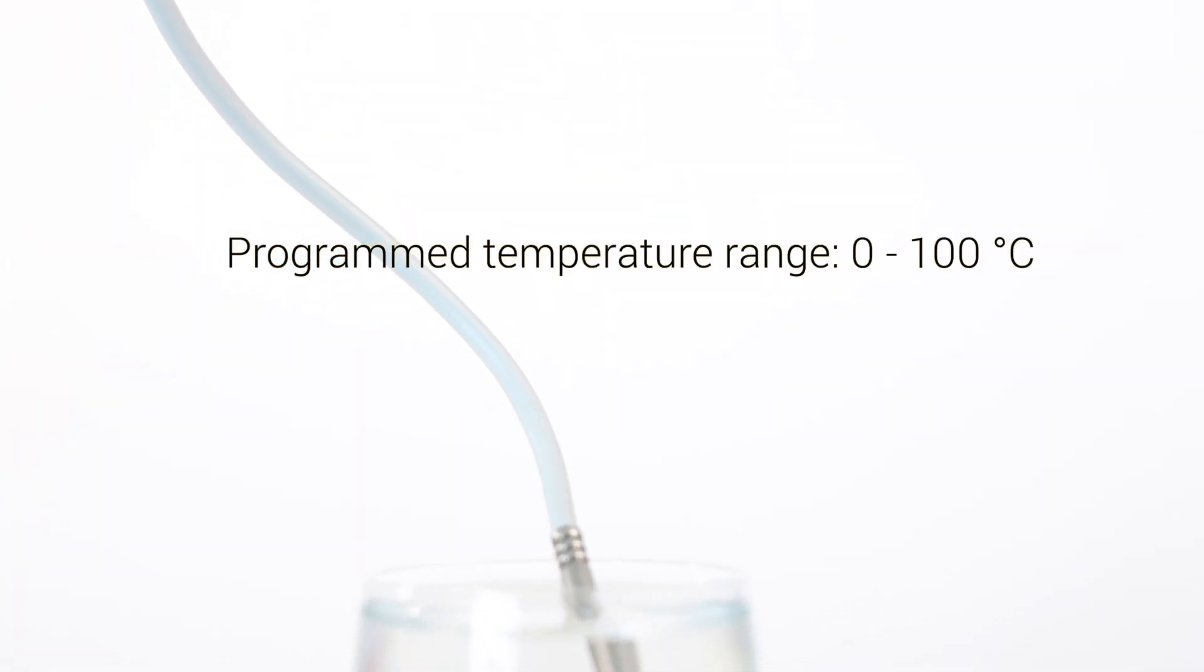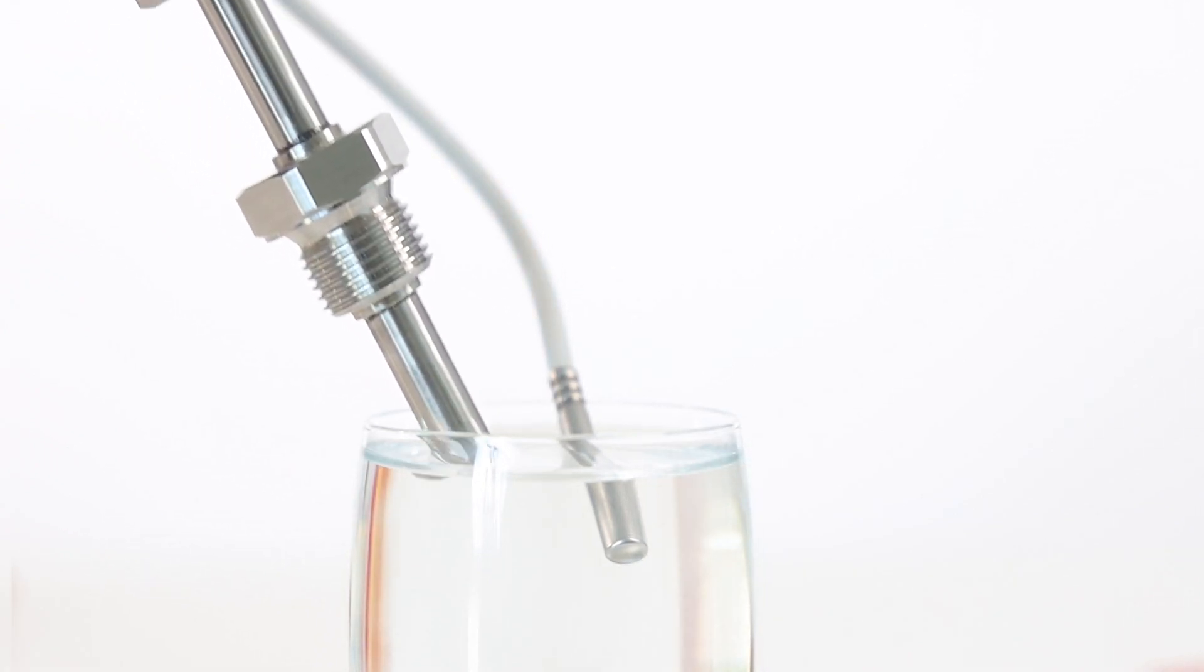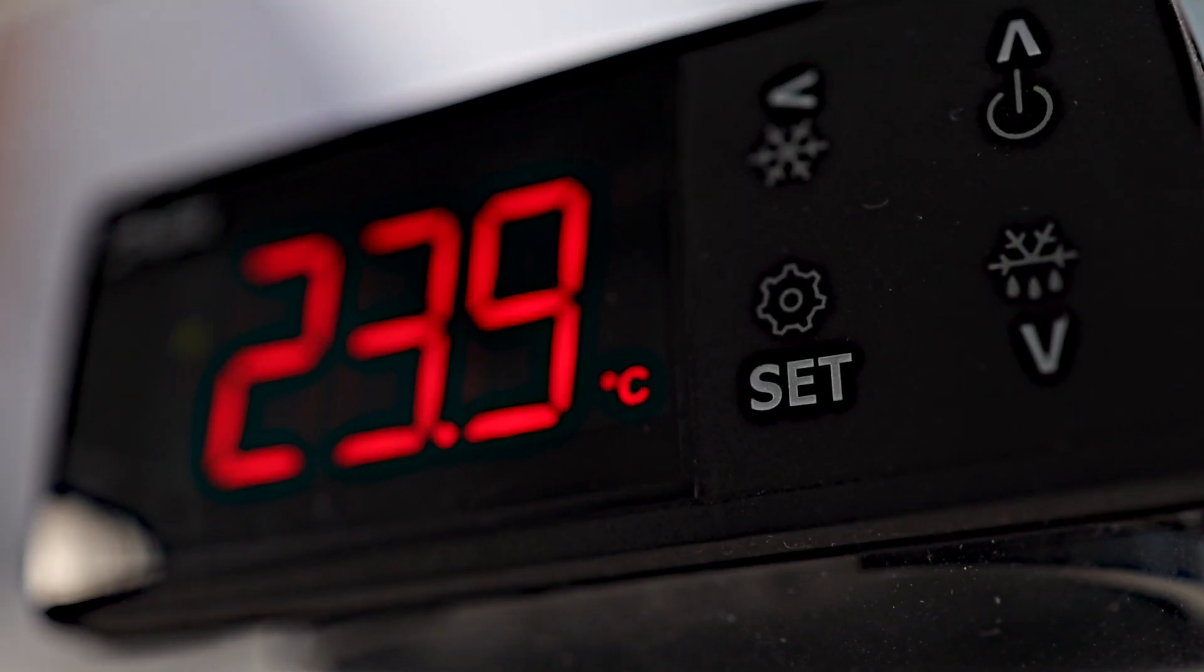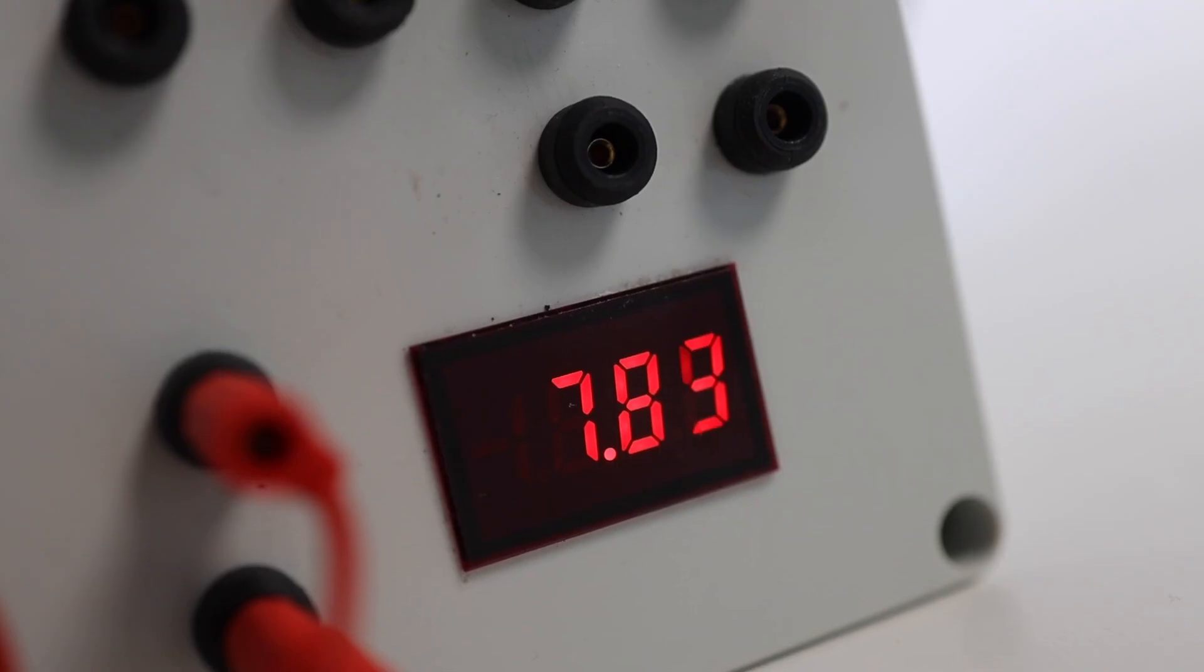The transmitter in our example is programmed from 0 to 100 degrees Celsius. Let's look at this example where the transmitter is inserted into water that is 24 degrees Celsius. The thermometer shows 24 degrees Celsius and the sensor output on the milliamp display shows 7.83 milliamp.